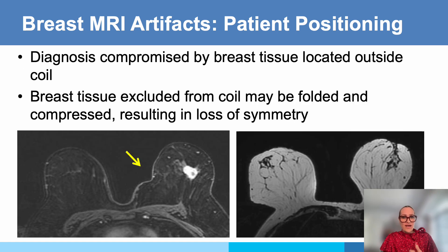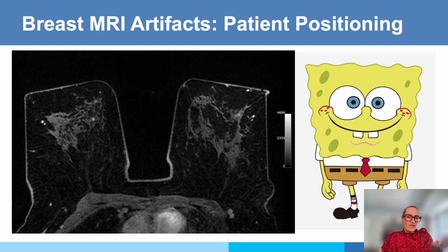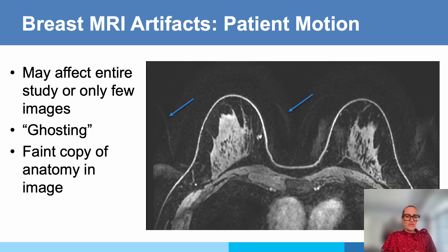Tissue can be excluded from the coil and might be folded or compressed, resulting in loss of symmetry which can also impede interpretation, particularly when it's outside of the coil. Sometimes there's nothing you can do about it. When the patient is large-breasted, you will have the so-called SpongeBob SquarePants artifact when the coil is not able to accommodate the full volume — there's really nothing you can do about that. Things you can influence to some extent include giving optimal patient instructions, highlighting that lying still is the most important thing and her only active part in this exam, though there will still be motion.